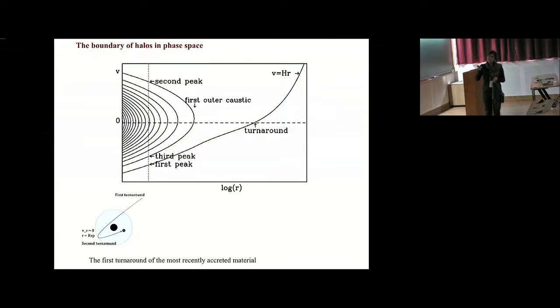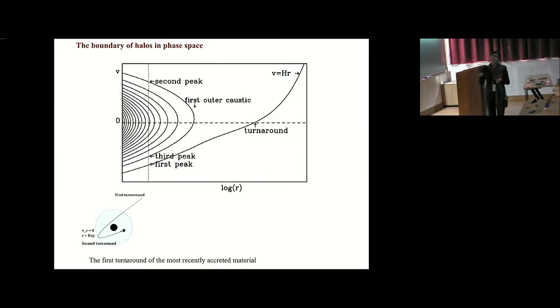And this edge, basically this first turnaround of the most recently accreted matter, forms the edge of the multi-streaming or the orbiting region of the halo. Within this region, you have things which are on orbits or shells that are crossing. Outside of this region, you only have a single infall stream. So this region basically defines the phase-space boundary of the dark matter halo.